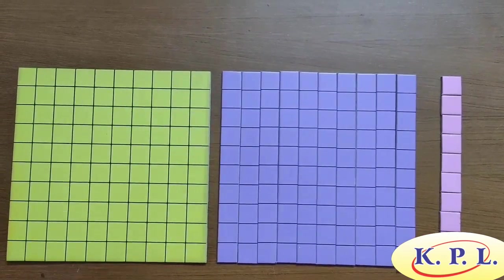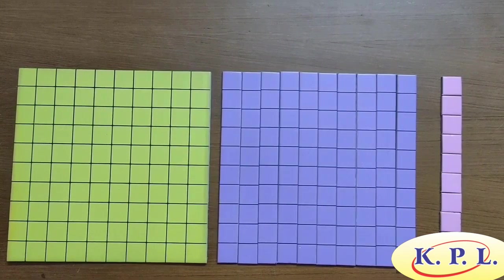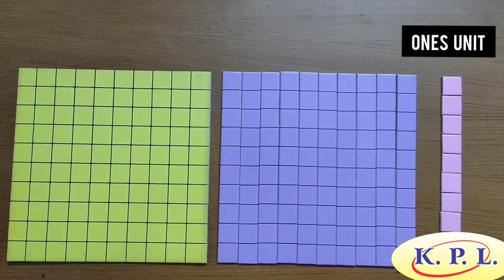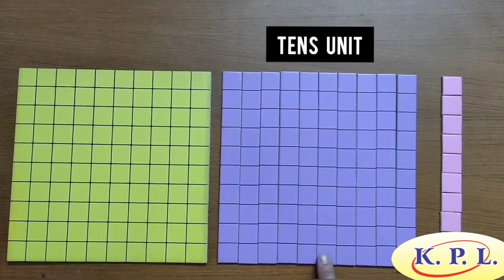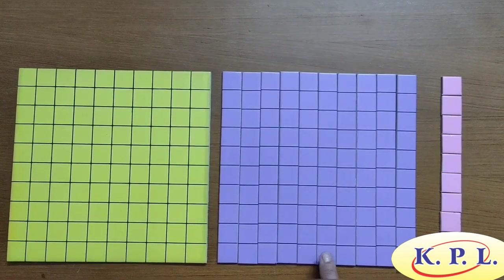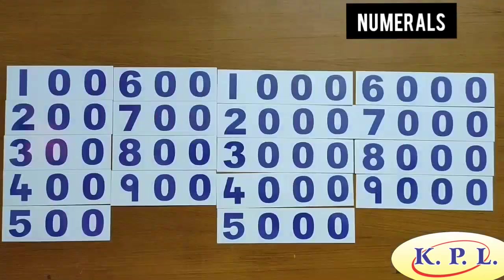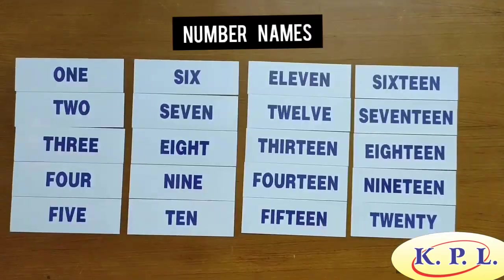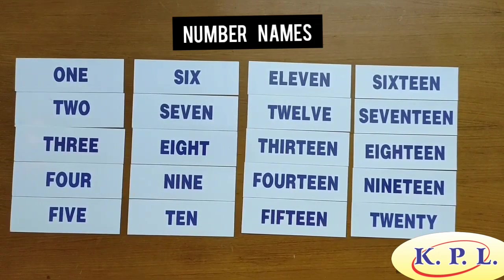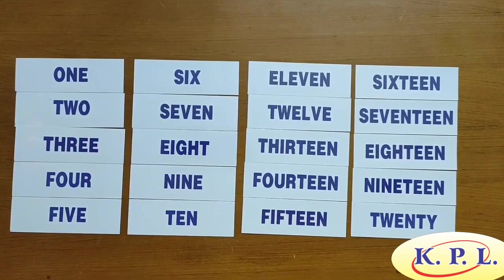Here we have the KPL place value kit. This place value kit has 1 unit, 10 strips of 10 units, a board of 100 units, numerals and number names. With the help of this kit, we are going to learn about the value of a digit in a number.